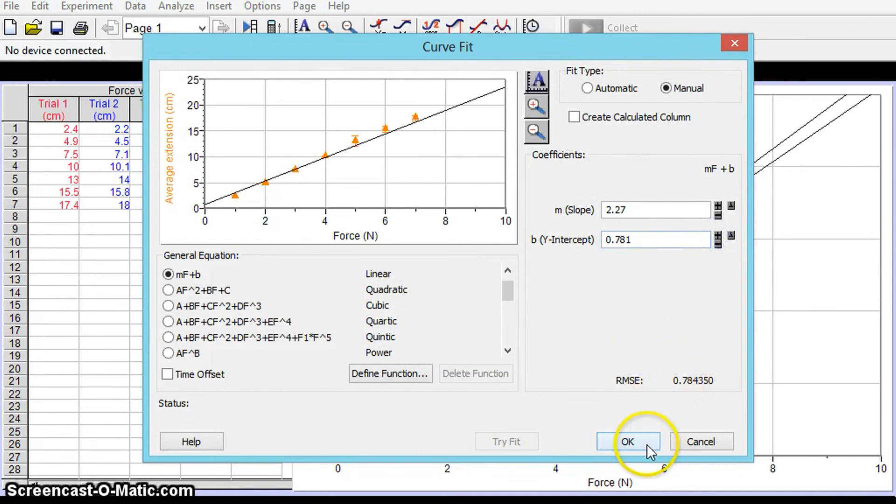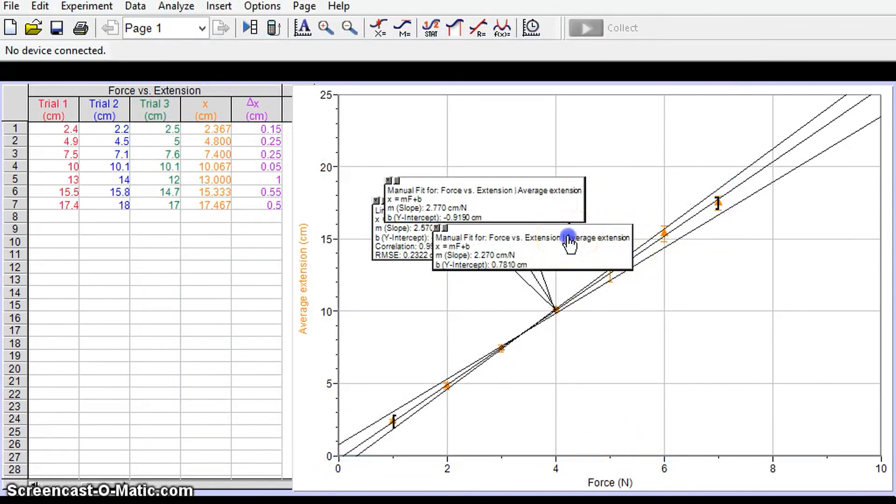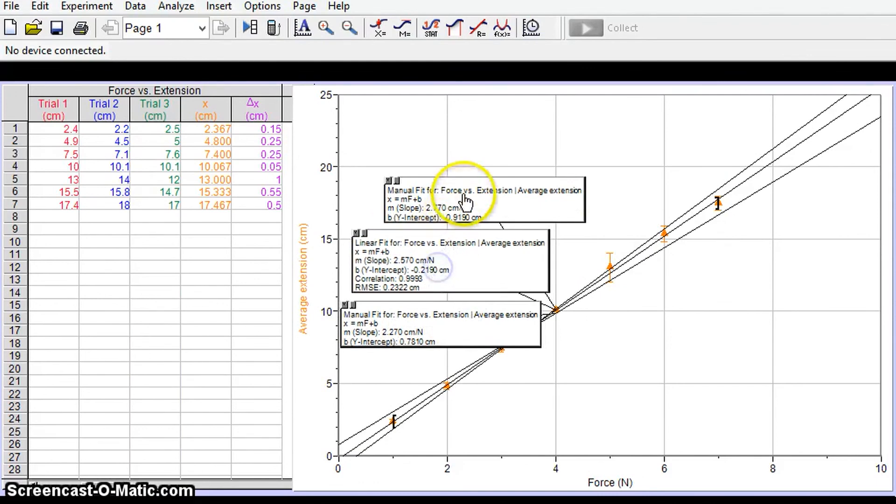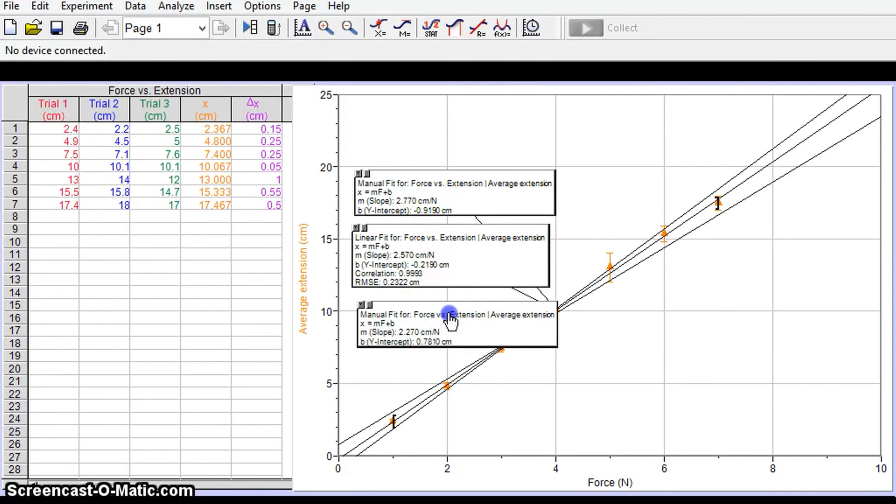That's not looking too bad just rearrange this here we can see we have two manual fits for the maximum and minimum and our linear fit for the best fit. So that is how to apply custom error bars to your data in Logger Pro.